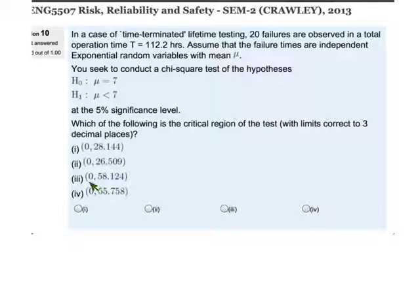This would be the correct answer if we were looking for mu greater than 7 for a time-terminated test, which means we have the slightly higher degrees of freedom, 42 instead of 40. This is our correct answer if it was smaller than, so correct here, but if it was 40 degrees of freedom.